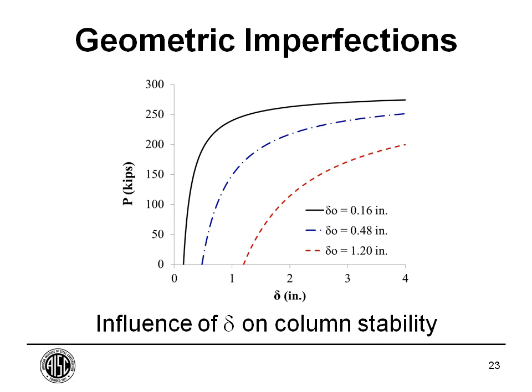This slide tells you why the initial deformation in a column is important. On the vertical axis is the axial load; on the horizontal axis is delta, the horizontal out-of-plane deformation at mid-height. The solid line on top is for a column with an initial deformation of 0.16 inches — based on a 13-foot-long column right at the limit for the code of standard practice. The behavior goes up to a point then becomes non-linear, and not long after that, with more load, it becomes unstable.